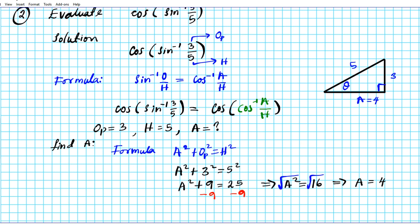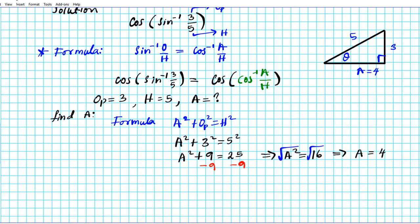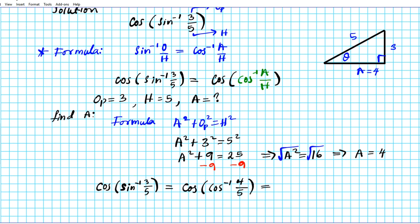Now that we have the adjacent, we can proceed. Rewriting the original problem: cos(arcsin(3/5)) = cos(arccos(adjacent/hypotenuse)) = cos(arccos(4/5)). We now have cosine of the inverse cosine — two functions that are inverses of one another. They cancel each other out, giving us our final answer: 4/5.